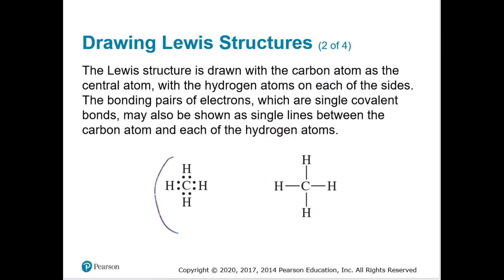Here's what it looks like. Notice carbon has eight electrons around it, and each hydrogen has two, just like helium. We can also represent it with single lines between the carbon atom and each of the hydrogen atoms.